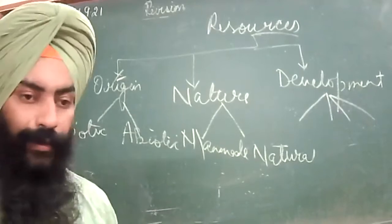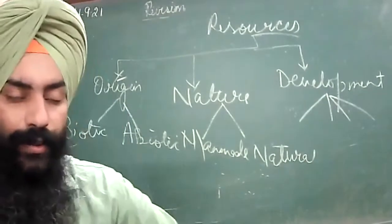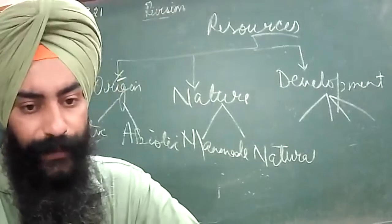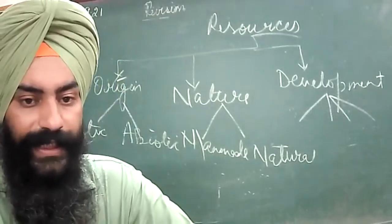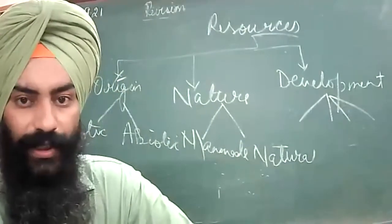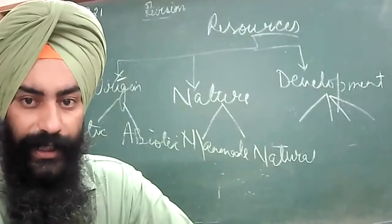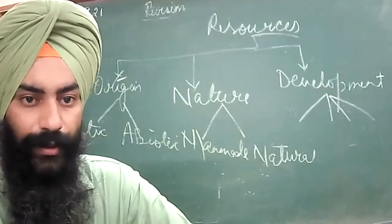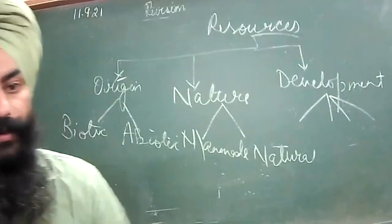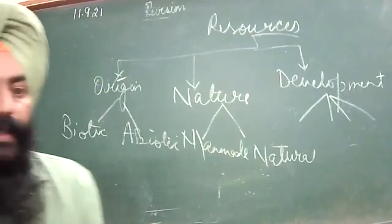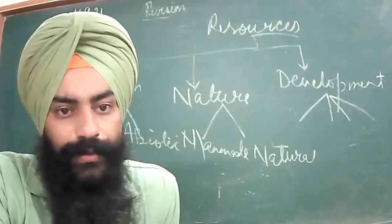The fourth classification is on the basis of renewability. There are two types: exhaustible resources and inexhaustible resources, also known as renewable resources and non-renewable resources.